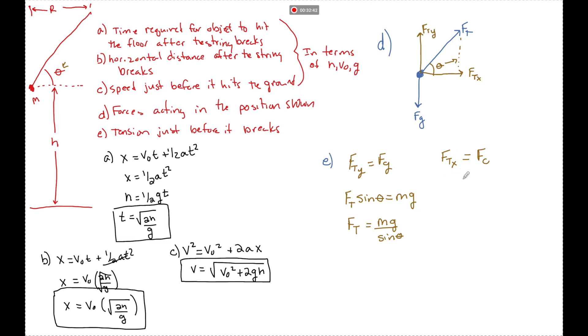If we look at the x direction, we can say that ft x is going to be the cosine, so that's ft cosine theta equals m v squared over r. So another expression for ft could be m v squared over cosine theta r.